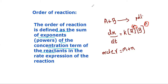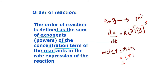Now if we look at this specific example: if A and B each have concentration raised to the power 1, then m is 1 and n is 1. We write 1 plus 1, so the order of reaction would be 2.